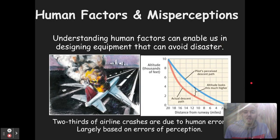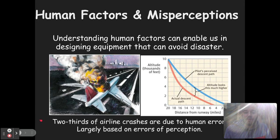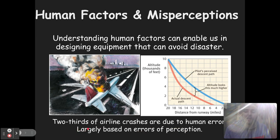Human factor psychologists also help design equipment to avoid disaster. The more we know about how humans make decisions and interact with tools, the safer things can be. Two-thirds of airline crashes are due to human error, largely based on errors of perception — misinterpreting information from instruments or about weather and flight patterns. So human factor psychologists are always working to design and implement things that are easier, safer, and more effective. That wraps up our perceptual interpretation notes — let me know if you have questions, and we'll move on to perceptual organization.